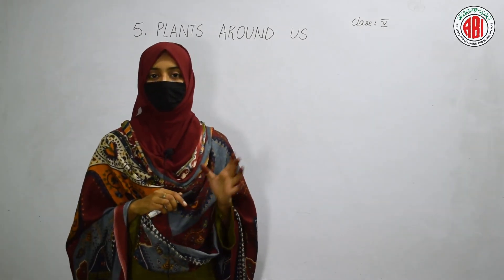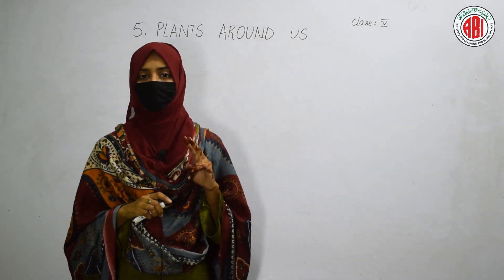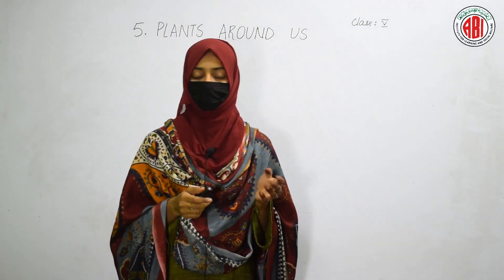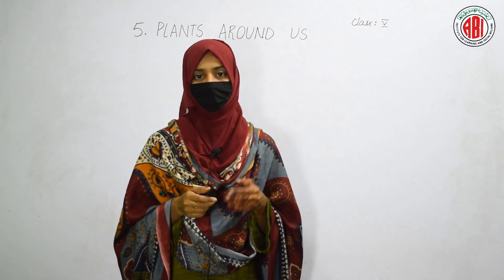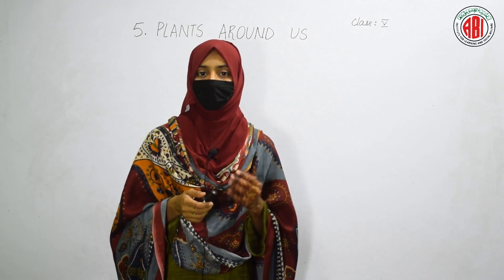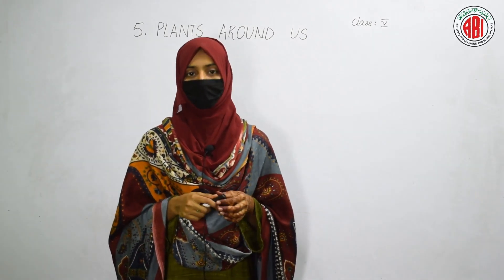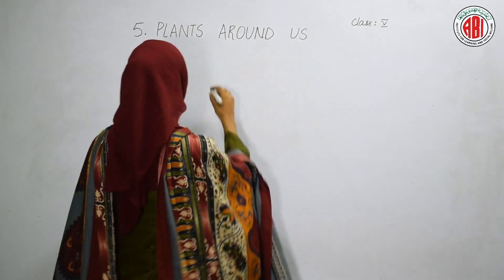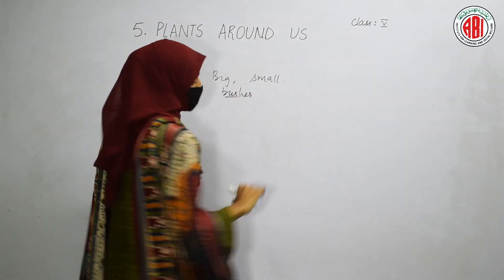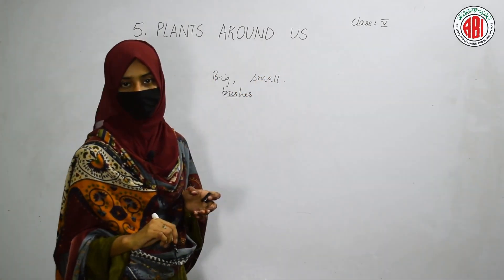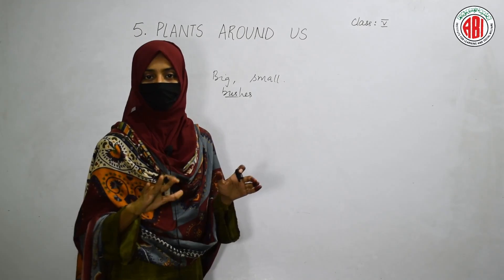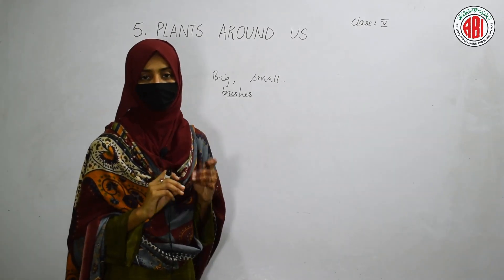Whenever you see a plant, two plants are not alike — they are different in some way in the structure of leaves, stem, or flower. Some bear flowers, some may not. If you see the trees, some trees are big, some are small, and some plants are bushy — we call them bushes.